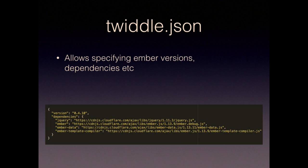Twiddle.json lets you specify your dependencies. I think it's about to be extended to allow setting Ember feature flags as well. At the moment it lets you specify different versions of libraries — you can use any version of Ember, jQuery, Ember Data, that kind of thing, or other libraries. You just edit that in the interface and you'll get those libraries loaded up.